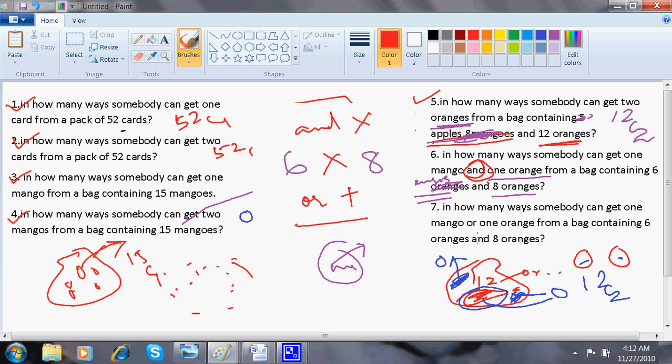In how many ways somebody can get one mango or one orange from a bag containing six mangoes and eight oranges. Six, eight, plus because there is an or word here. I believe I'm making you something clear.